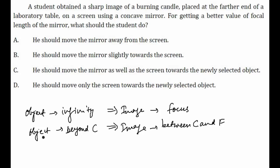So as the object is farther, the image will be closer to F. That means as far as the object is from the mirror, the image will be formed at focus because at that time the object will be assumed to be at infinity. In that case, he will get the better value of focal length of the mirror.